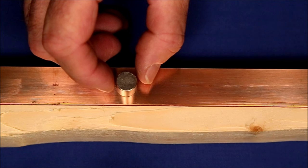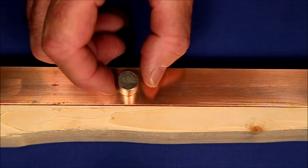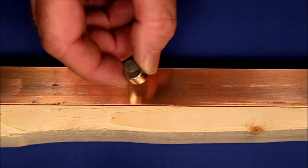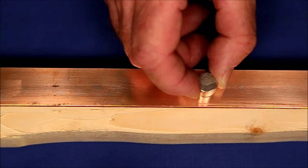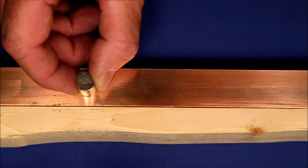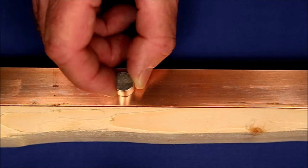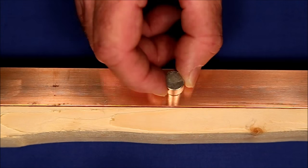A nice demonstration of Lenz's Law is to take a magnet and move it over a conductor, in this case a copper bar. It'll feel viscous as if you're trying to push it through honey.